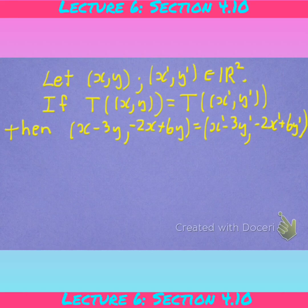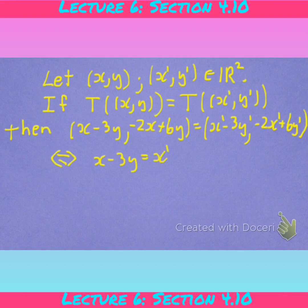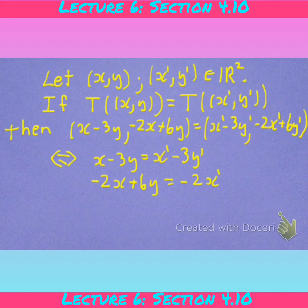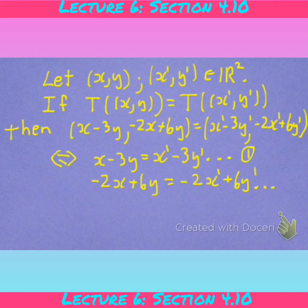That can only happen if and only if x minus 3y equals x' minus 3y', and also what we need is 2x plus 6y equal to negative 2x' plus 6y'. That gives us a little indication of what's happening.